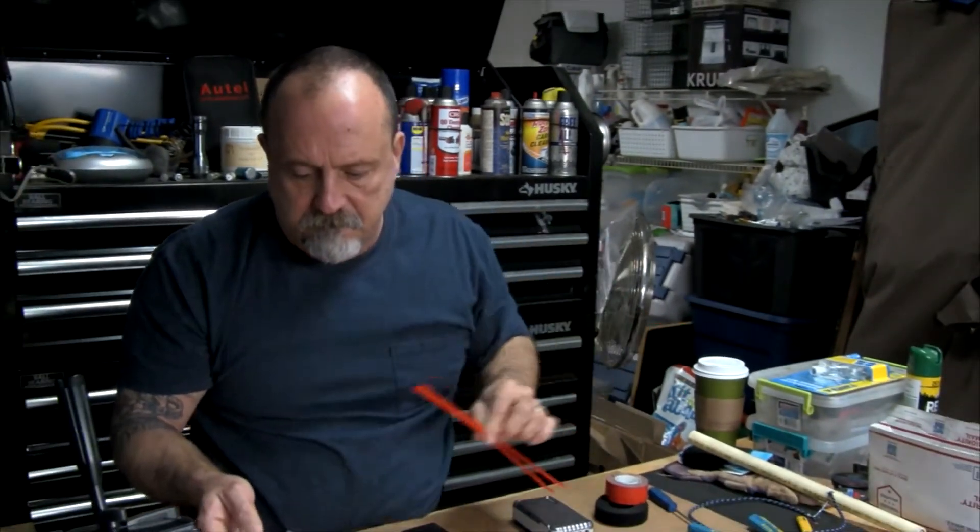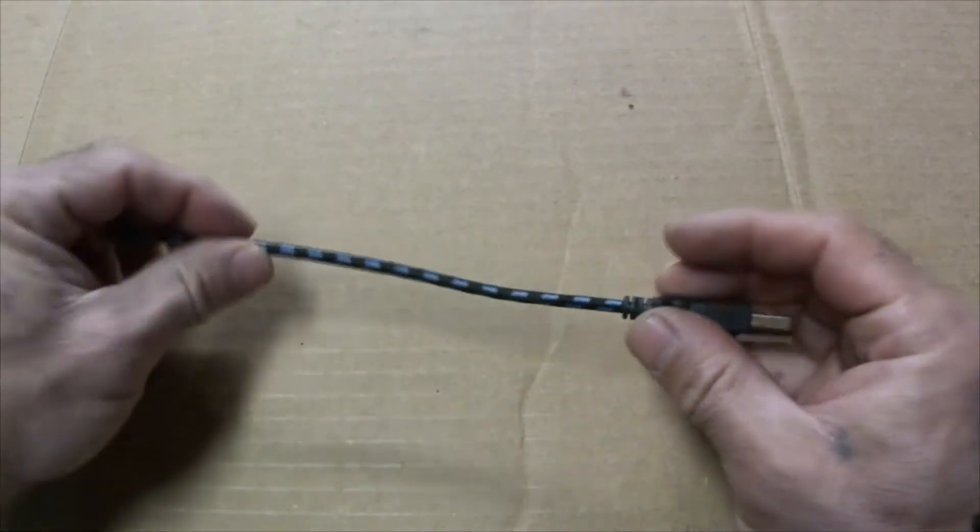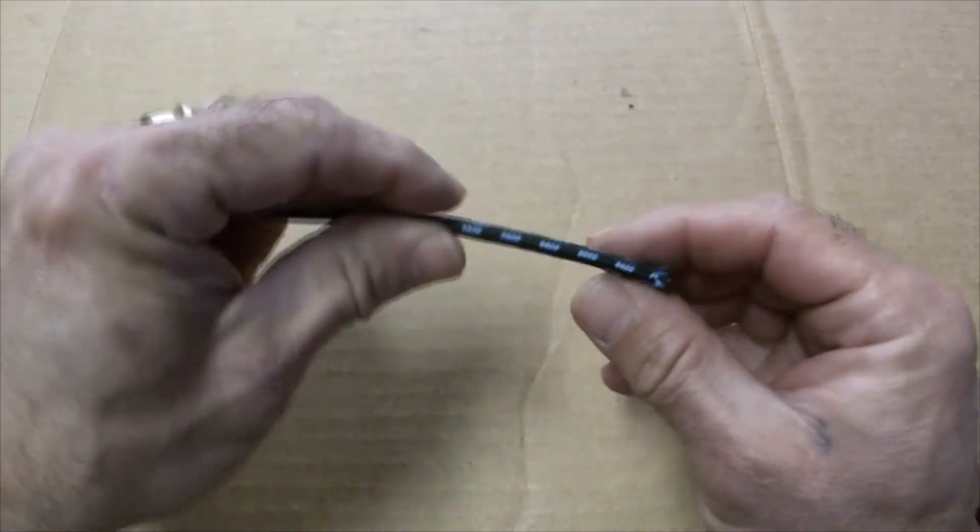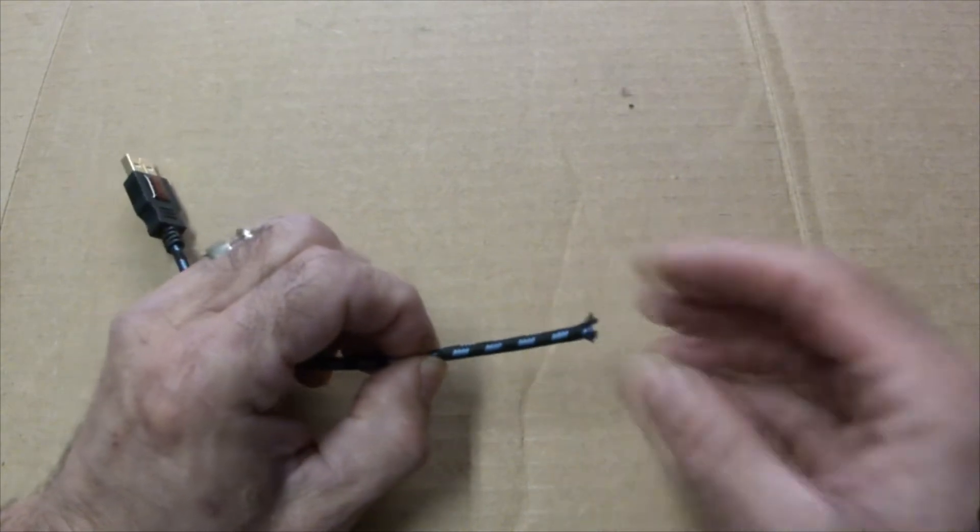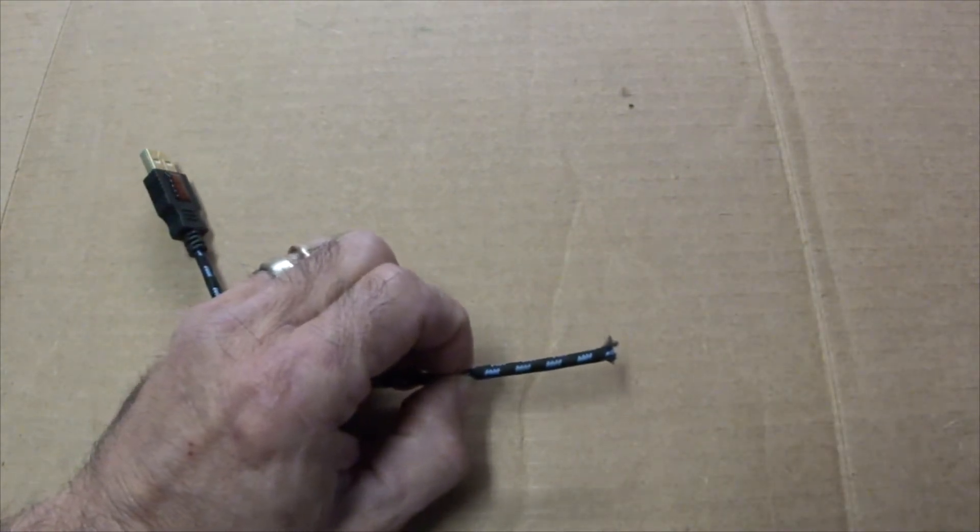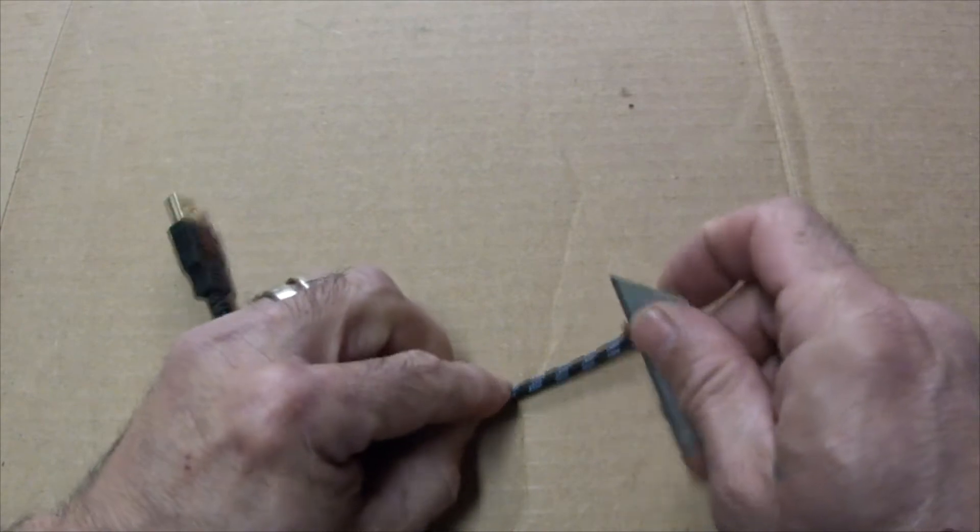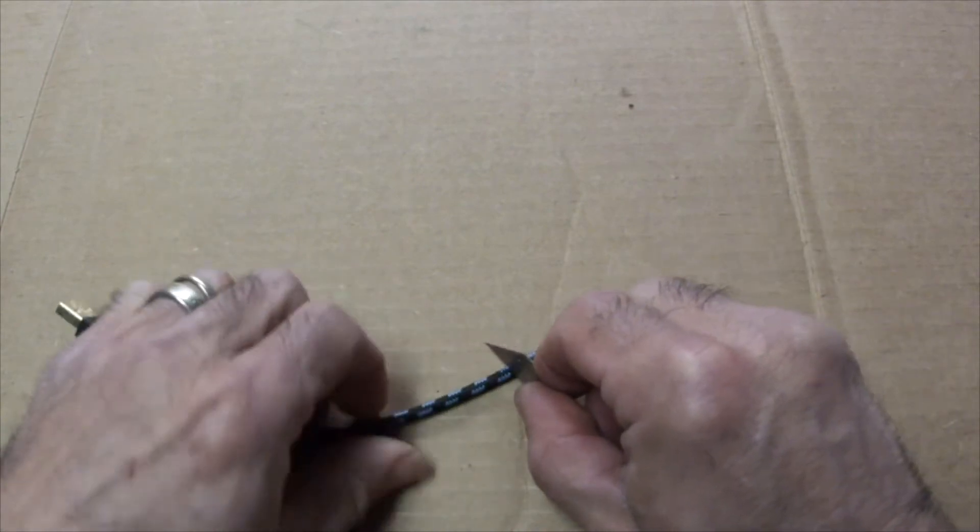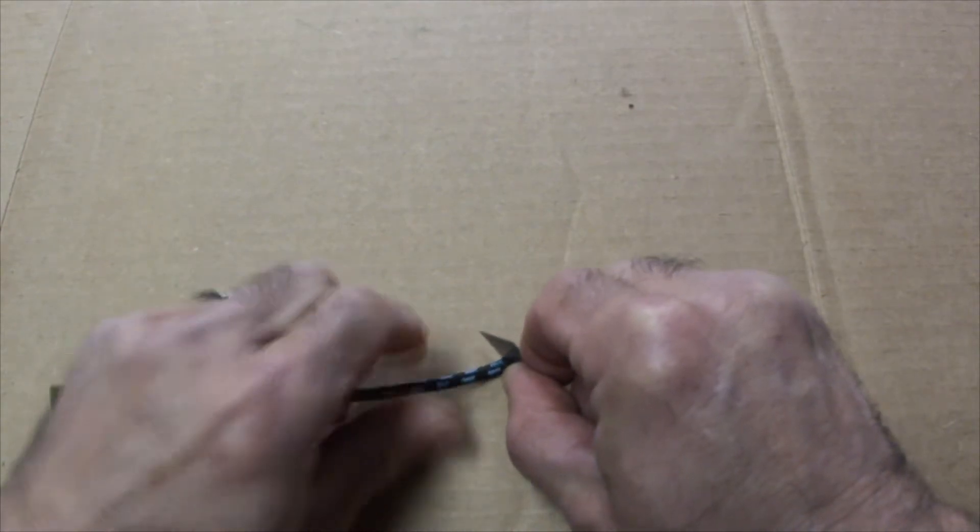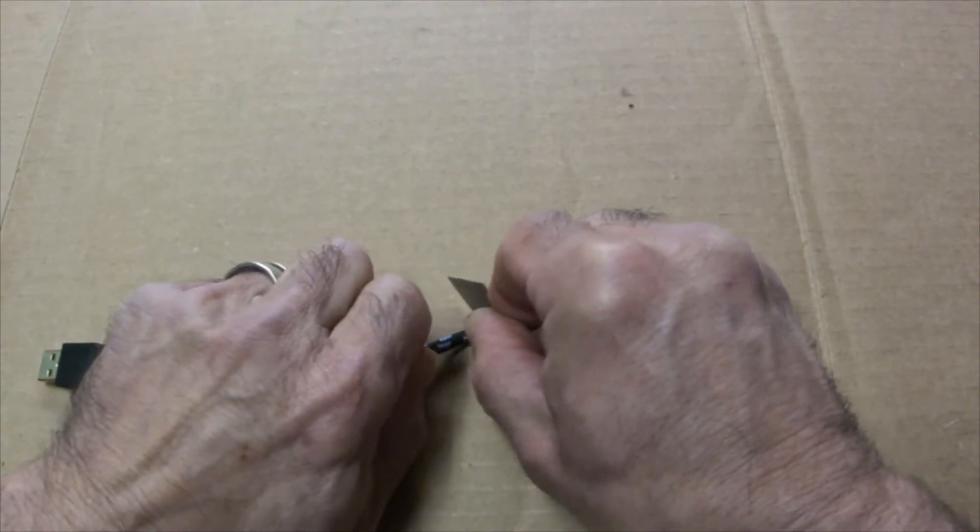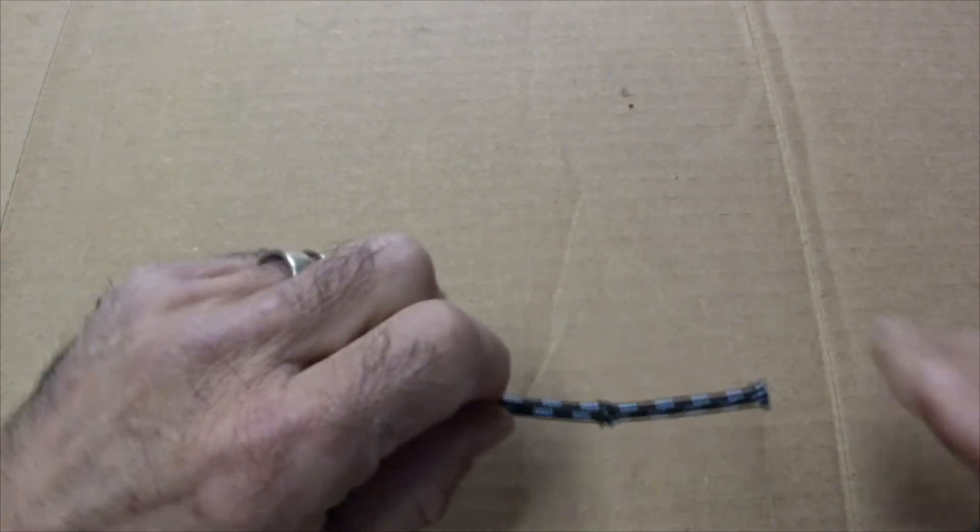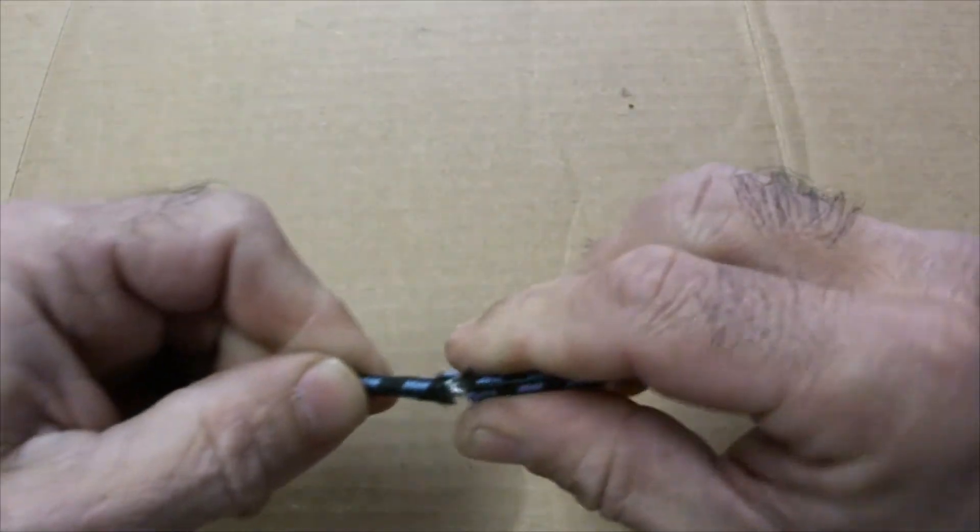So without any further ado let me go ahead and get started. I've got a short little stubby piece of USB cable here, I don't need it to be very long. The first thing I'm going to do is strip this and I'm going to use a razor and just gently roll it. That's going to be the easiest way to get the sheathing off.